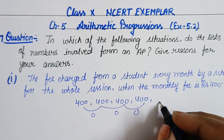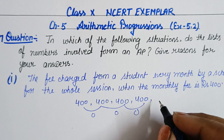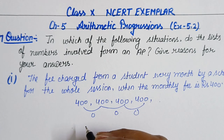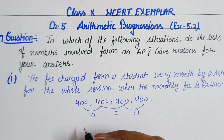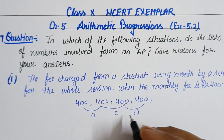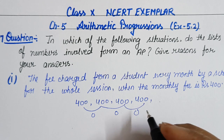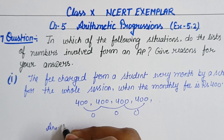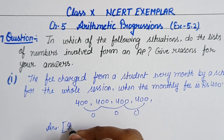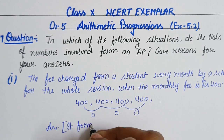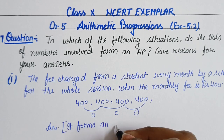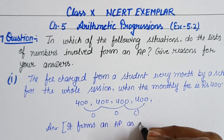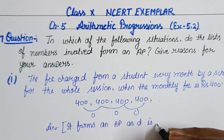Here the common difference d is the same — it should be 0, but it is the same throughout. So this AP series will form. The answer is: it forms an AP as d is the same.